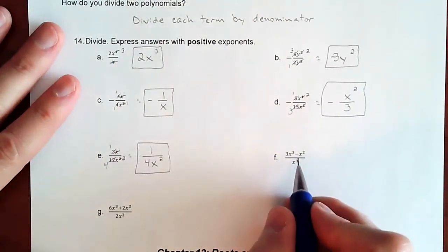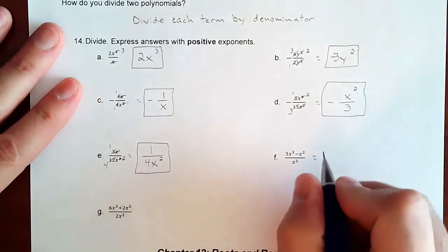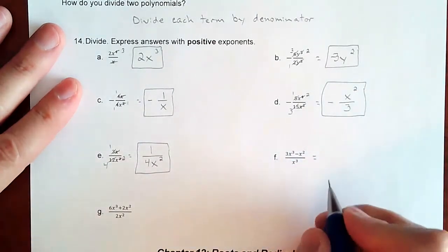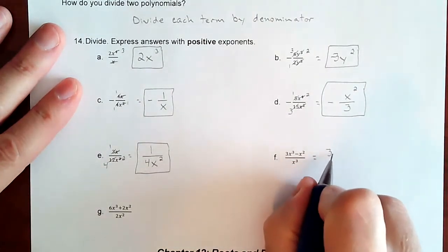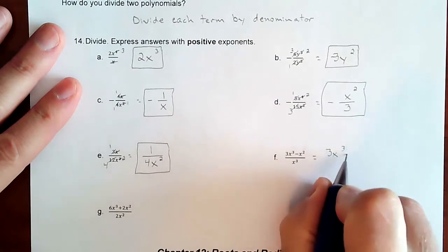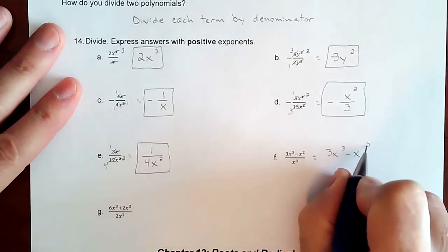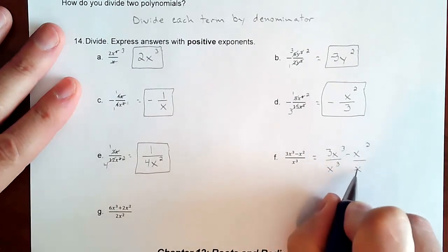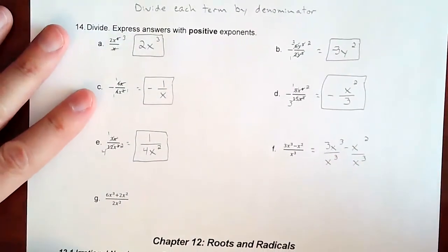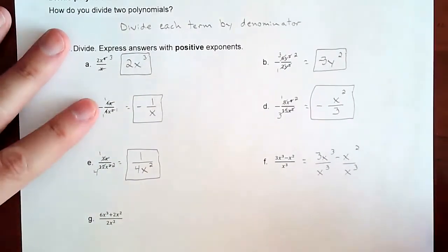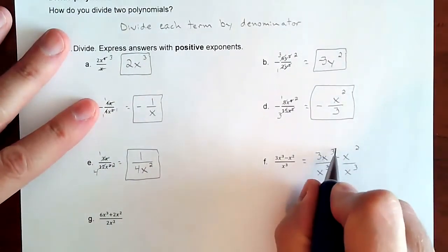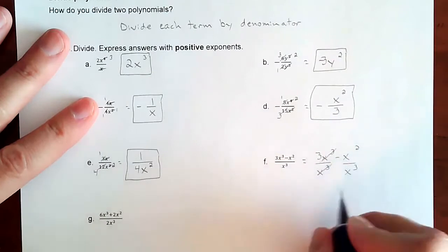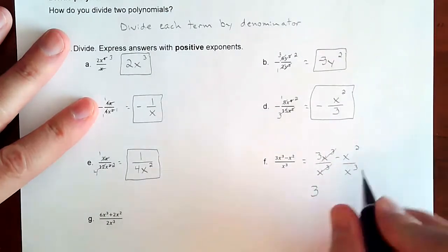So here's where we get to the adding subtracting ones. All that means is you're going to divide each term by that denominator. So it turns into three X cubed minus X squared, but each of them is going to be divided by X cubed. So basically it becomes two problems in one. So the X to the third on the top cancels the X to the third on the bottom, just leaves you with a three.